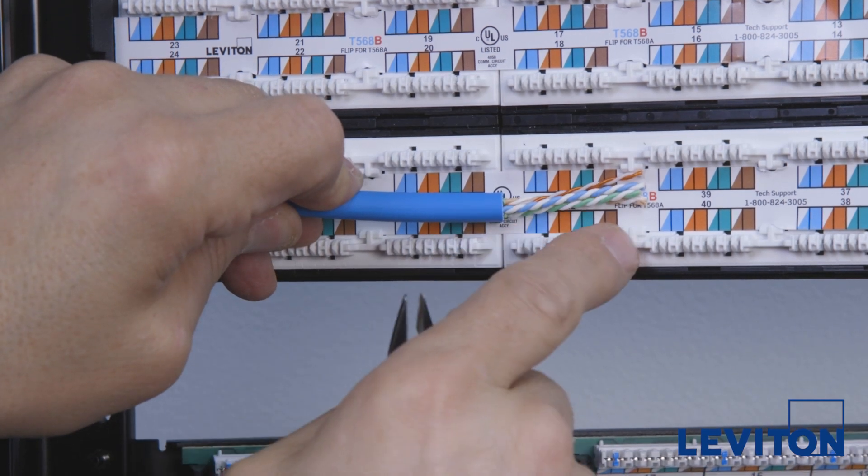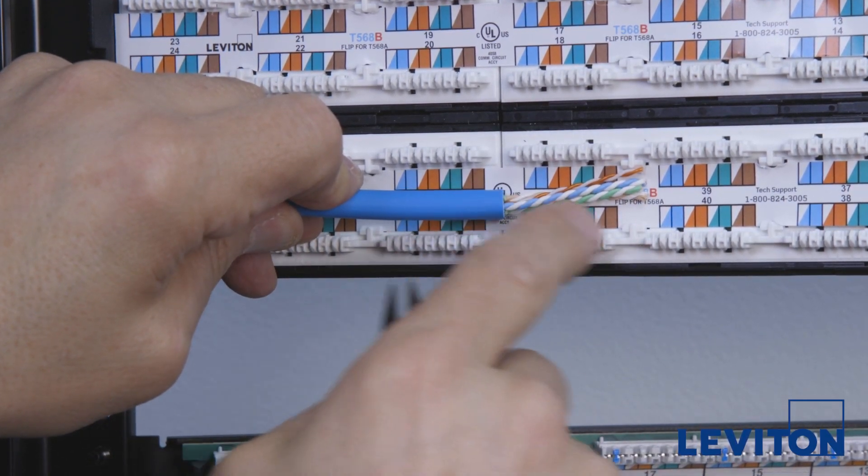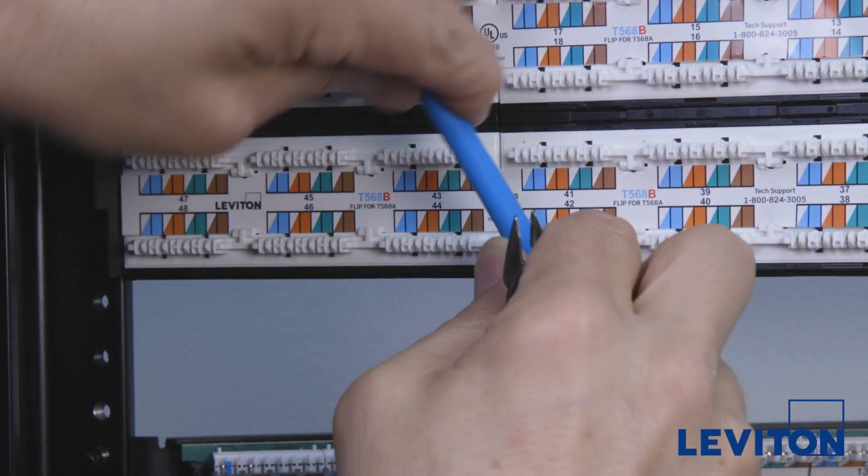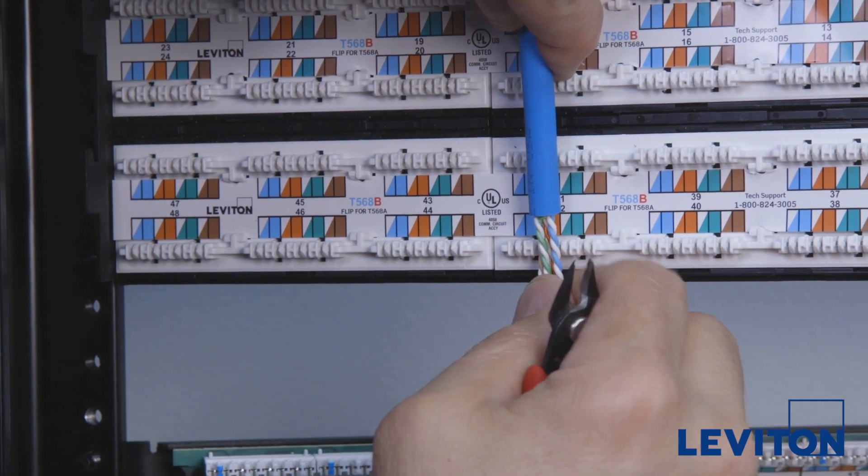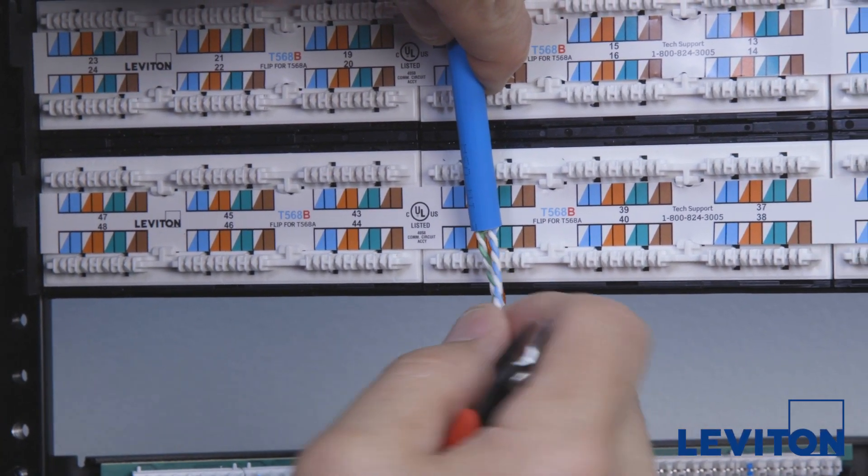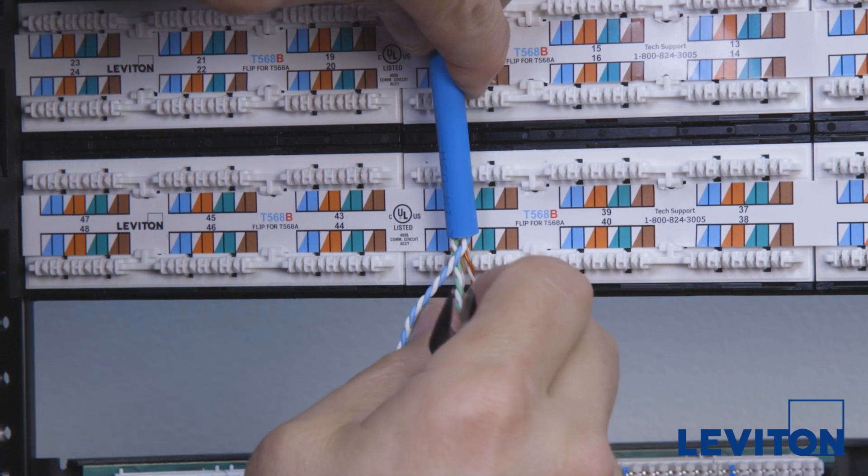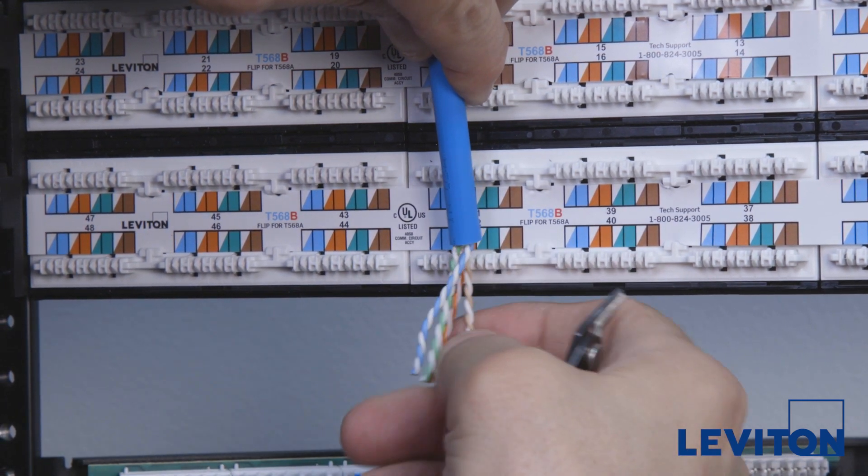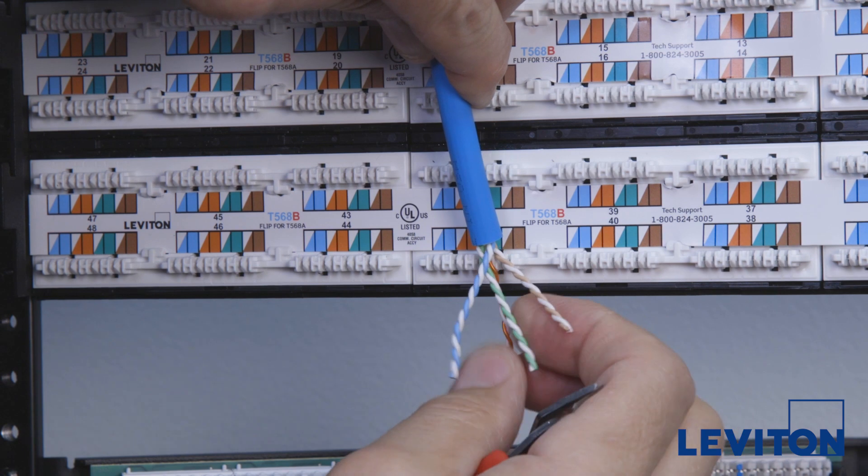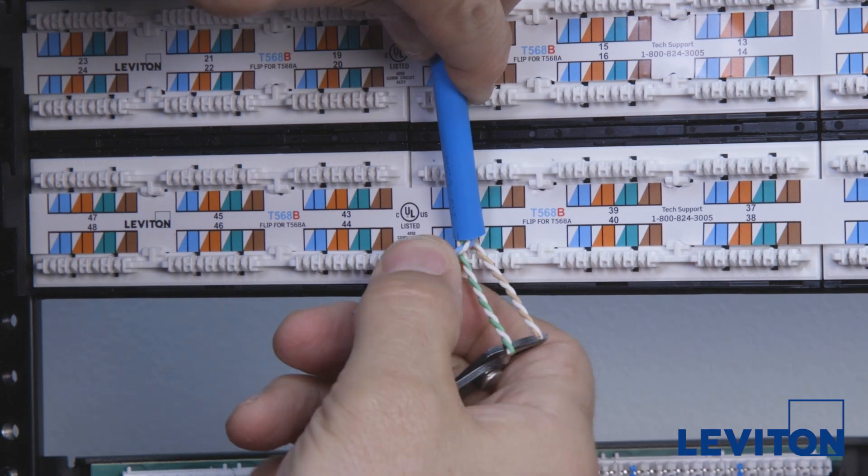A common mistake is to come into the IDCs from the side, but doing so leaves the blue pair short and the brown pair long. A better approach is to come down the center and splay the pairs out to where they are needed, as indicated by the colored marking on the IDC. This way, all of the pairs end up being an appropriate similar length.